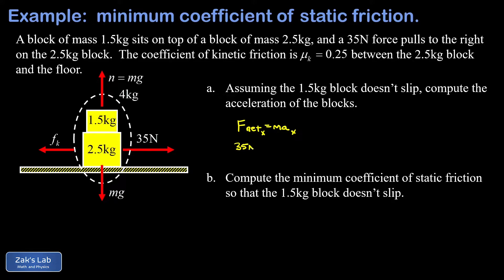So there's 35 newtons and then minus this kinetic friction force fk that's going to be equal to the total mass that we're accelerating here which is four kilograms times our unknown acceleration in the x direction. Now we can put in some details about the kinetic friction force.